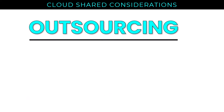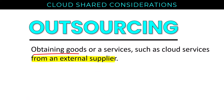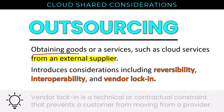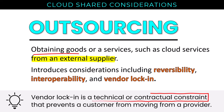Service level agreements stipulate performance expectations like maximum downtimes and often include financial penalties if the vendor doesn't meet expectations. OLAs and PLAs — operating level agreements and privacy level agreements — may also appear on the exam and will be covered in domain six. Outsourcing — obtaining goods or services like cloud services from an external supplier — introduces considerations like reversibility, interoperability, and vendor lock-in, all of which we've discussed. Vendor lock-in can be a technical or contractual constraint that prevents a customer from moving from a provider.